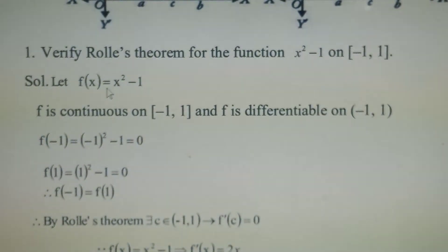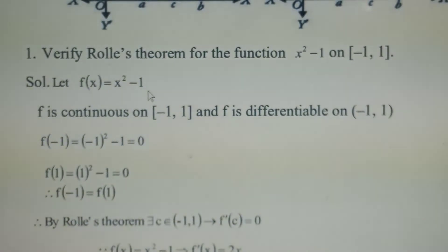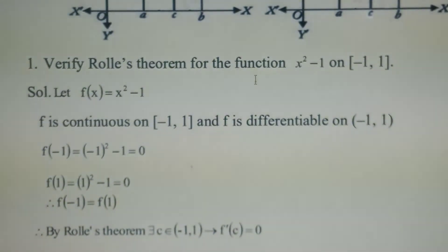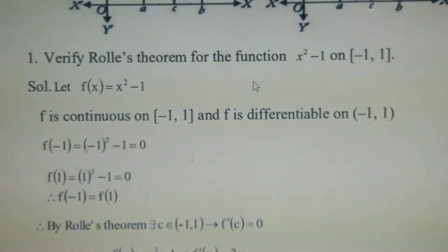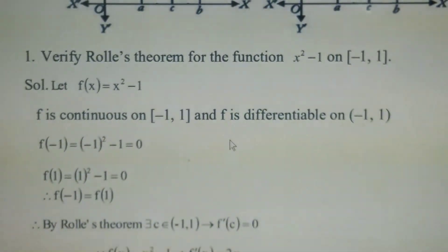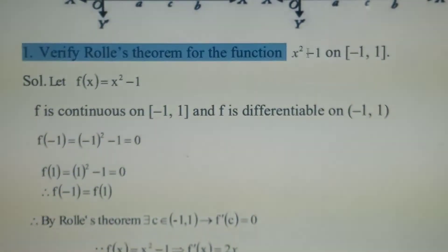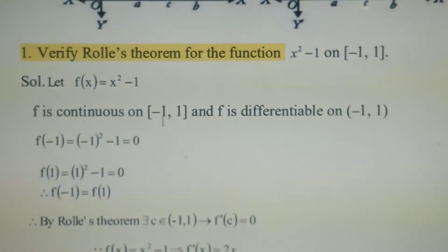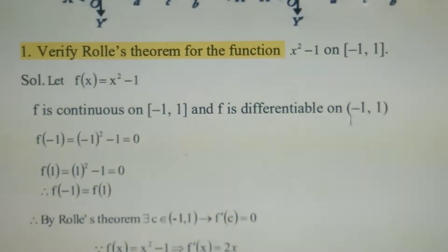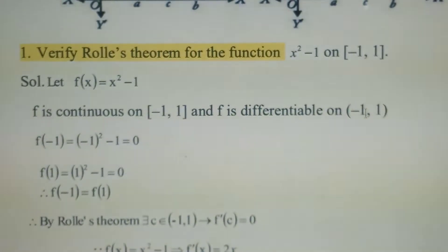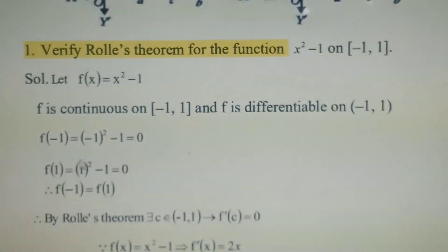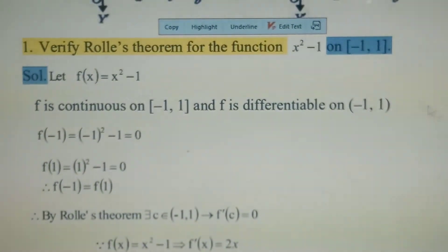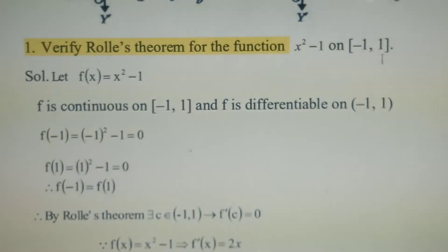The given function: consider f(x) = x² - 1. What is Rolle's Mean Value Theorem? Suppose f is any function from [a,b] to ℝ, then f is continuous on closed interval [a,b], f is derivable on open interval (a,b), and f(a) = f(b). The a value here is -1 and the b value is 1.